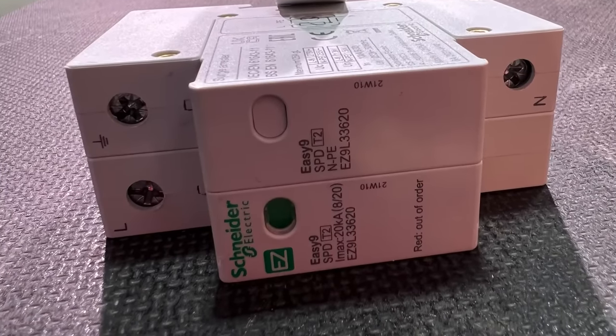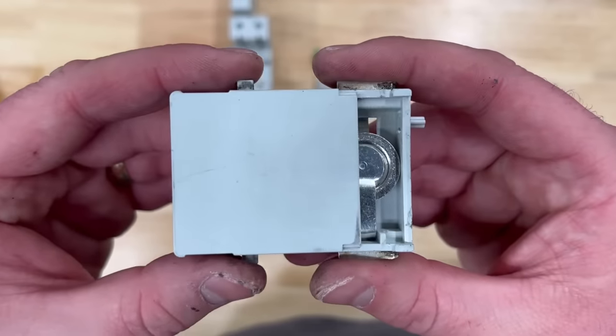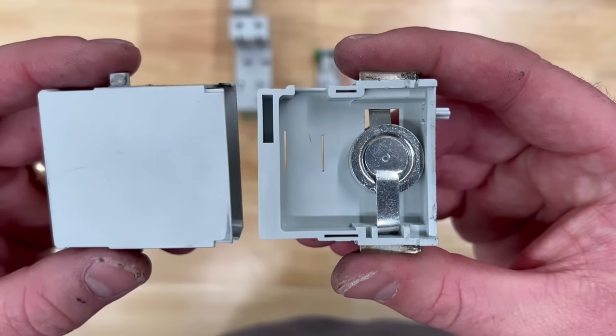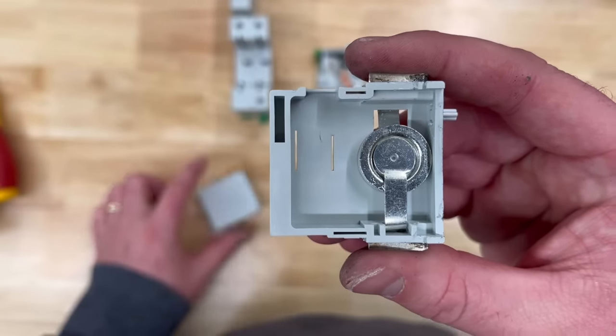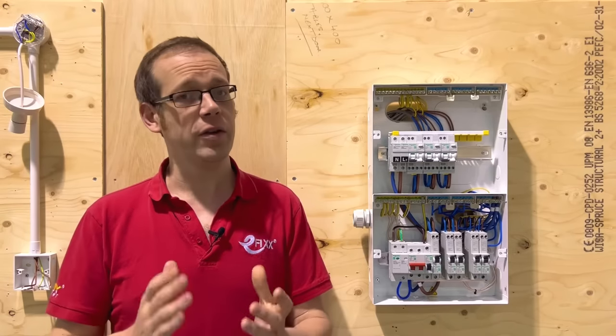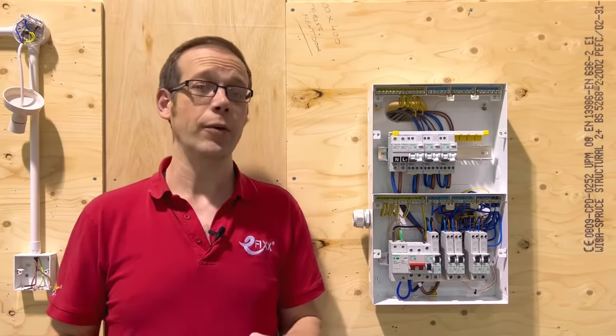An SPD usually contains either a gas discharge tube or a metal oxide varistor. Both of these devices change their resistance depending on the voltage applied to them. So when the voltage goes up, the resistance lowers.